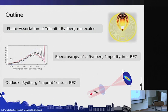The talk will be separated into three parts. In the first part, I will talk about photoassociation of trilobite Rydberg molecules and how we made it possible with coupling between spin degrees of freedom. In the second part, I will briefly cover spectroscopy of the single Rydberg impurity in a BEC. In the third part, I will give an overview of how we want to use this to image the wave function of the Rydberg electron.